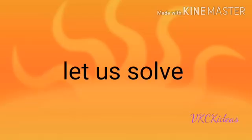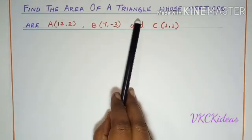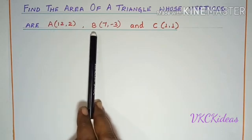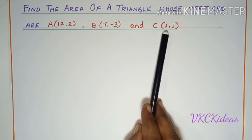Now let us start with a problem. Find the area of a triangle whose vertices are A(12, 2), B(7, -3), and C(1, 1).